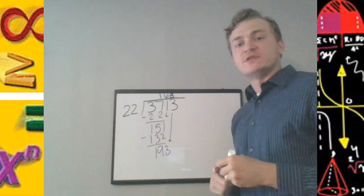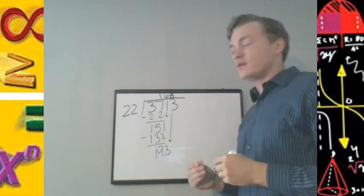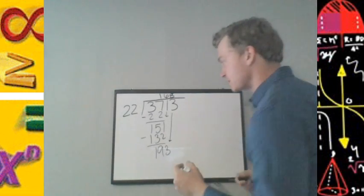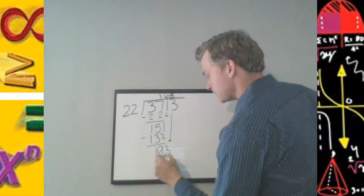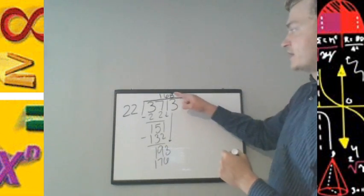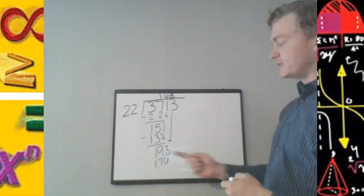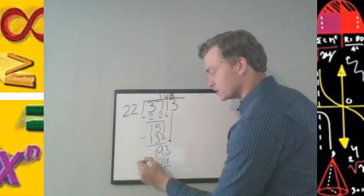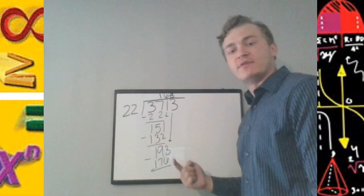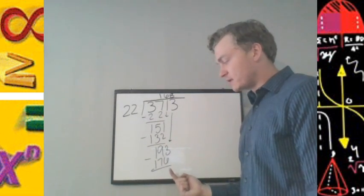8 times 22, again, as we saw, need to count that back out. It's 176. All right, just make sure. 8 times 2 is 16. 8 times 20 is 160. 160 plus 16 is 176. So now, subtracting to see what we have left over, we get 17.